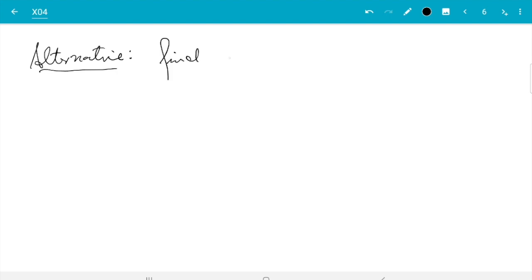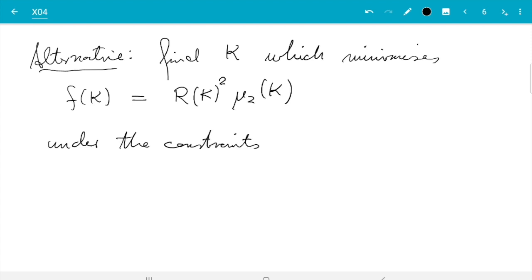is find k, which minimizes, and now let's write f of k, which is the quantity we have just seen. So R(k) squared μ₂(k). And there are constraints, namely k must be a kernel. So under the constraints, well, what are they? First, it must integrate to 1. That is the only real one. Let's just call that g. So g of k defined to be integral k of x dx equals 1.